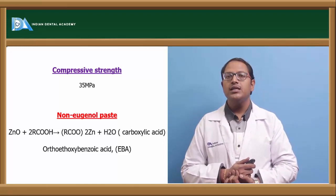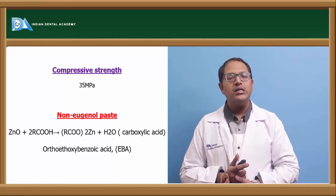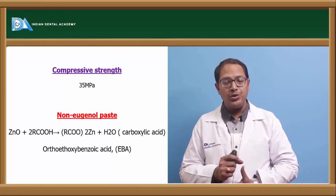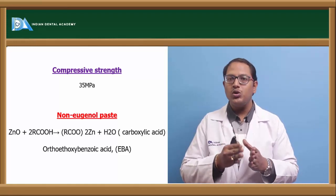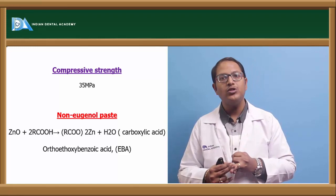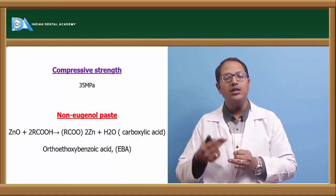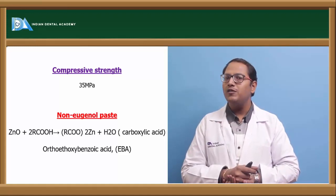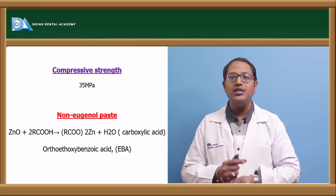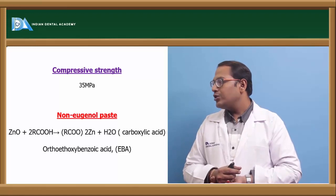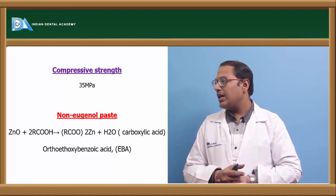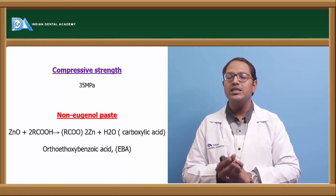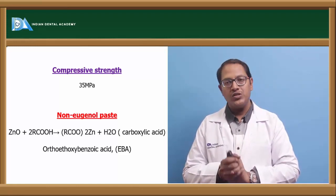Non-eugenol pastes such as Frigenol were developed because eugenol causes irritation to the gingival mucosa and some patients have allergic reactions to it. In non-eugenol paste, EBA (orthoethoxybenzoic acid) is mixed with zinc oxide instead of eugenol. Orthoethoxybenzoic acid is less irritating than eugenol, making it a suitable alternative for sensitive or allergic patients.